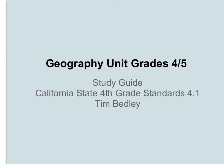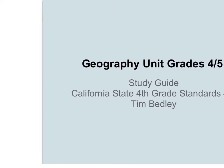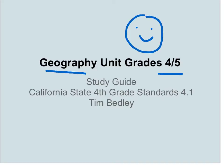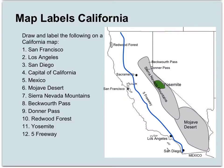All right ladies and gentlemen, for our geography lesson today for fourth and fifth grade, we are going to be learning about labeling different spots on the California map. Here it is, here's California. Pay close attention because you're going to have to be able to take a blank map of California and show all these spots on that map.